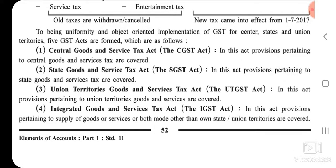To bring uniformity and objective-oriented implementation of GST for centers, states, and union territories, five GST Acts are formed. The first one is the Central Goods and Service Tax Act, the CGST Act — 'C' stands for Central. In this Act, provisions pertaining to Central Goods and Service Tax are covered.